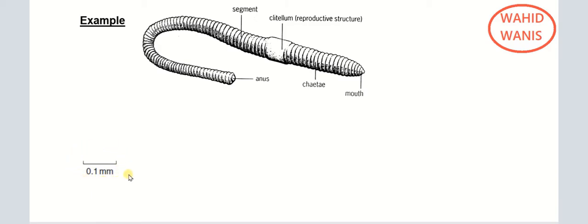This scale bar allows us to calculate the magnification. The length in drawing is 1 centimeter, which equals 10 millimeters. The actual real length is 0.1 millimeters. So the magnification equals 10 divided by 0.1, which gives a magnification of ×100.